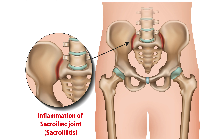How does sacroiliac joint pain present? Similar to other conditions, SI joint pain can present in a wide variety of ways. Sometimes you may develop pain in the lower back. In other cases, you may sense pain that radiates from your hip into your groin. You may also notice that the pain gets worse when you try to stand up after sitting for a long time. SI joint pain can also present as numbness or tingling, with a sensation of pins and needles in your hip or leg.